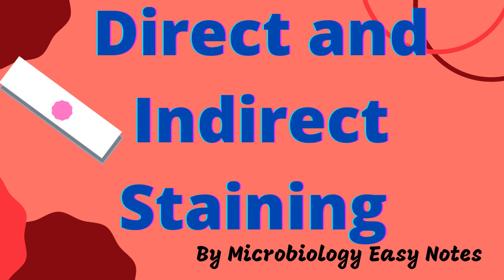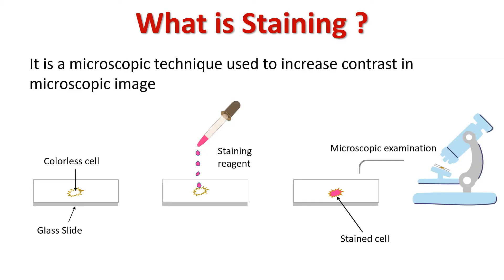So let's start. What is staining? Staining is a microscopic technique used to increase contrast in a microscopic image. Microorganisms are almost colorless, therefore it is difficult to observe them when they are unstained. Staining gives color to the colorless cells, tissues, or other microscopic components like bacteria, viruses, capsule, spores, etc.